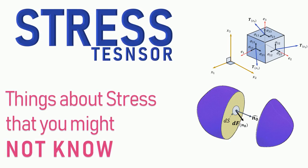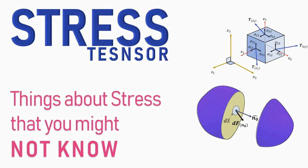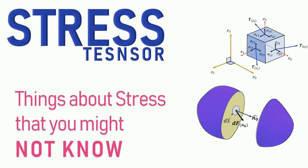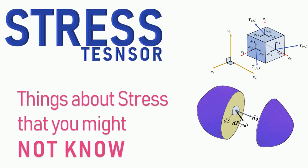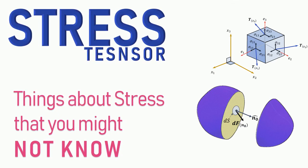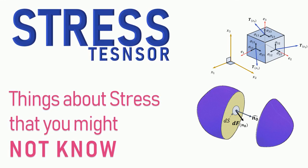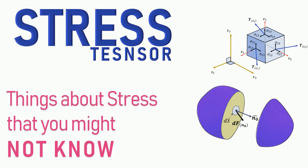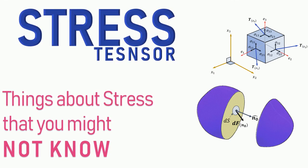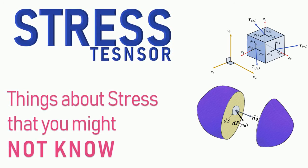In the previous video, we established why stress is a tensor, saw how to represent this tensor using the stress cube, and gave meaning to the components of the stress tensor. In this video, we are going to understand the impact of the coordinate system. All the components we discussed throughout the series were defined with respect to a specific coordinate system. If we change the coordinate system, the components change, but the physical property remains the same.